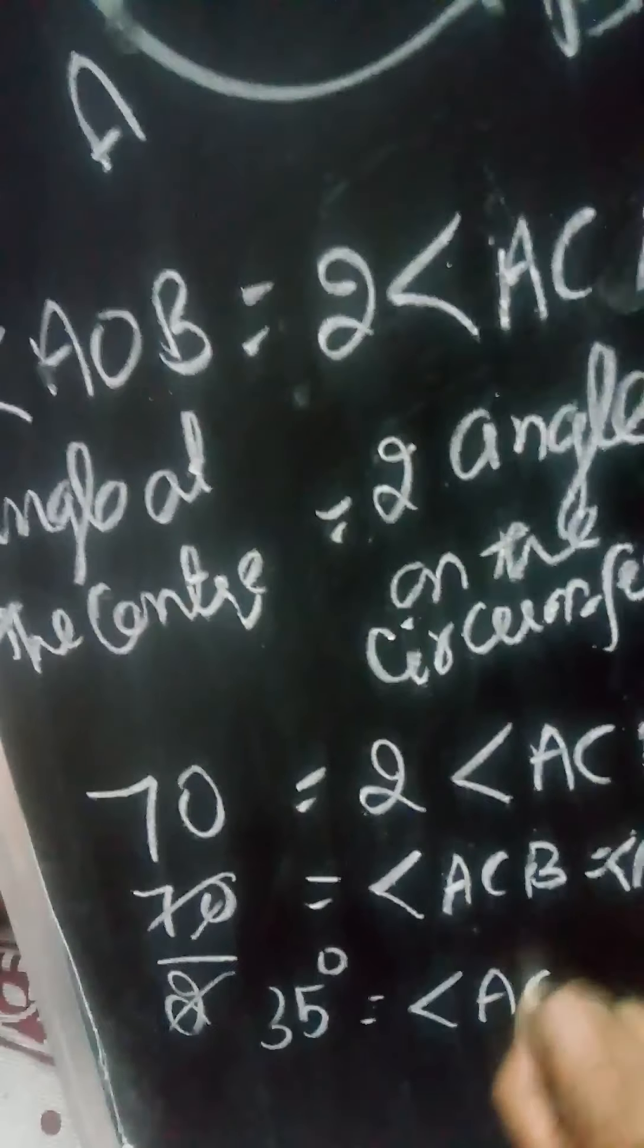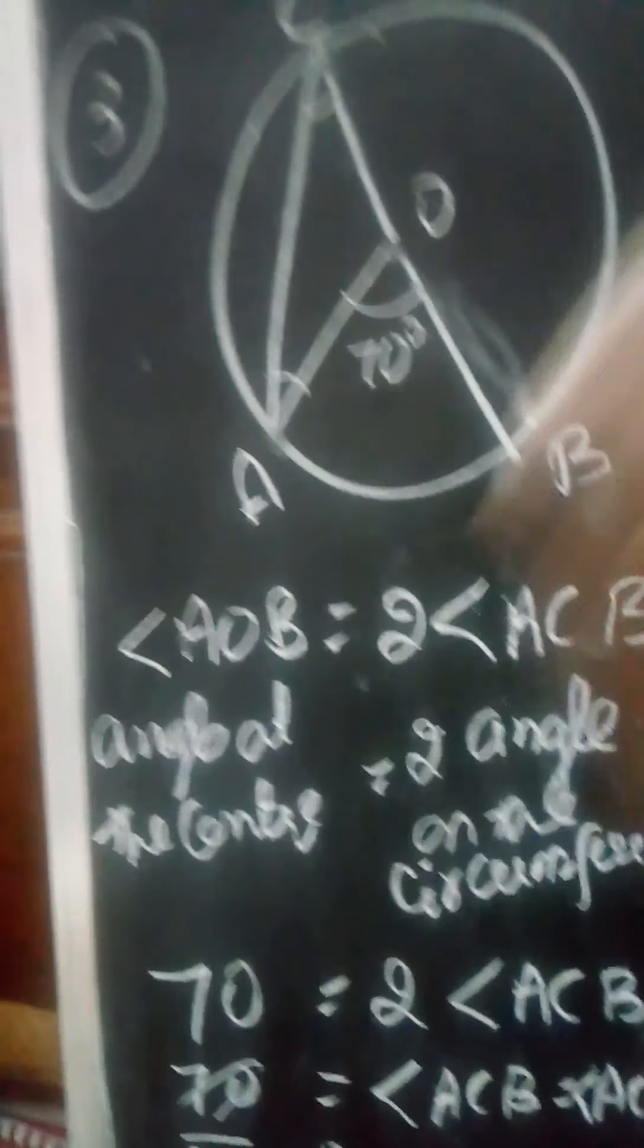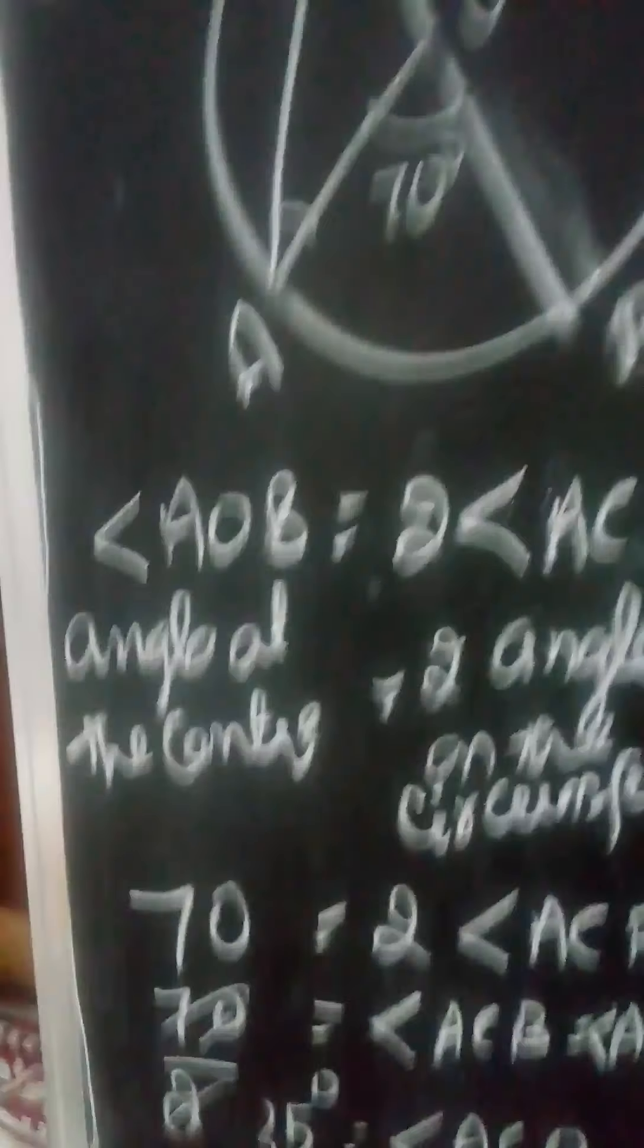Okay, now OC and OA are radii, so OC is equal to OA.